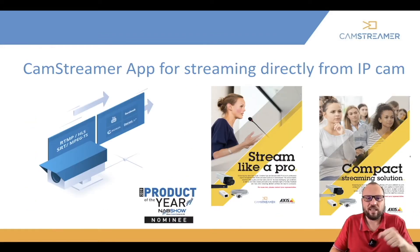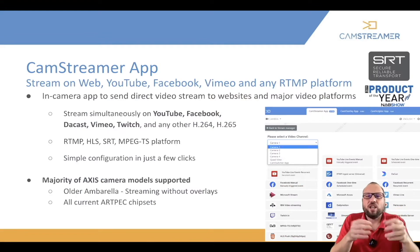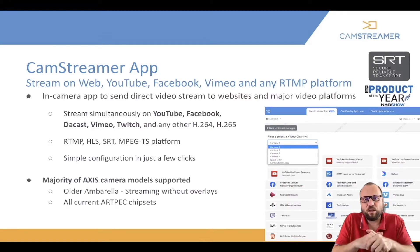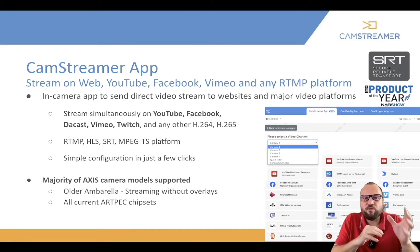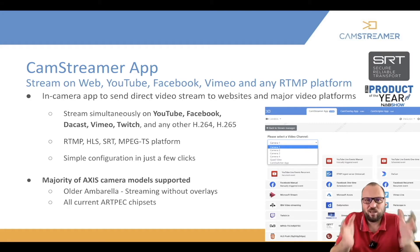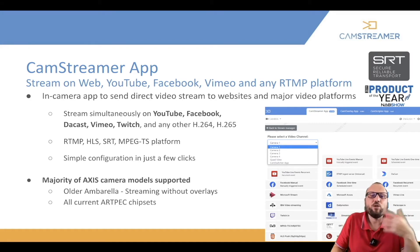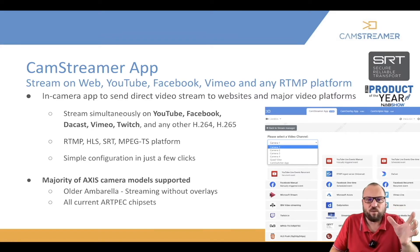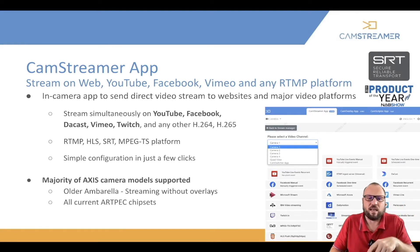Let's have a look at the CamStreamer app. With CamStreamer you can just choose the view area of your camera, select the platform where you want to push it, and that's it. The CamStreamer app is here to stream directly from camera on YouTube, Facebook, your website, Vimeo, Dacast, Twitch, any RTMP server, HLS, SRT — you name it, CamStreamer got it. You can control the streams easily via API and the beauty of CamStreamer is that it works also on older Ambarella chipset Axis cameras.